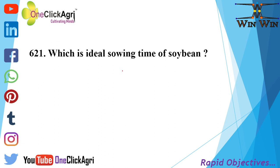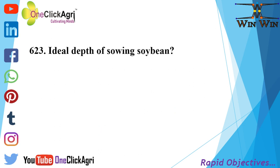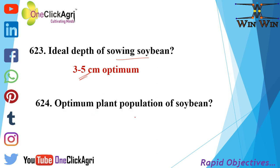The ideal sowing time for soybean is 20 June to 15 July. Geometry of soybean: Kharif crop row to row 45 cm, inter-row 4 to 5 cm; spring crop inter-row 30 cm. Ideal depth of sowing is 3 to 5 cm. Optimum plant population is 0.45 million plants per hectare.